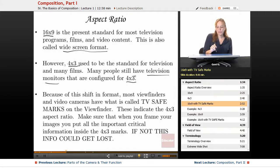Because of the shift in format, most viewfinders and video cameras have what's called TV safe marks on the viewfinder. These indicate the 4 by 3 aspect ratio. Make sure when you frame your images you put all of the important critical information inside the 4 by 3 marks. If not, this info could be lost.